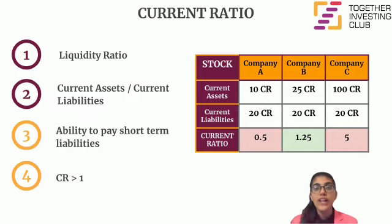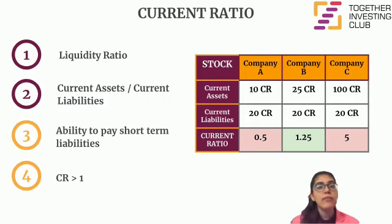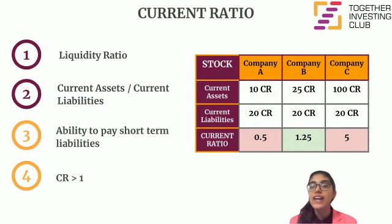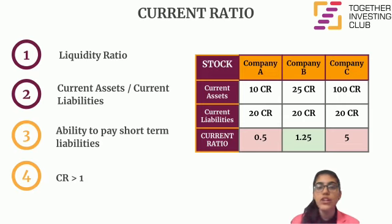The current ratio of Company A comes out to be 0.5, while that of B comes out to be 1.25, and that of C comes out to be 5. This means that Company A might not be able to pay its short-term debts as compared to Company B or C, and that Company C is not using its assets very efficiently. In this case, Company B is in a position to pay its short-term obligations if they arise, and thus is a better investment than Company A or Company C.